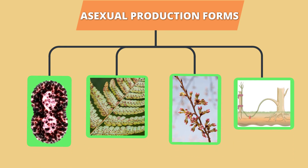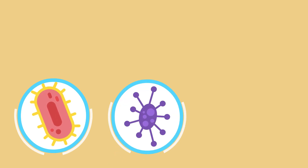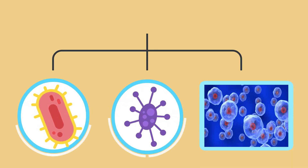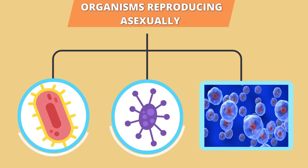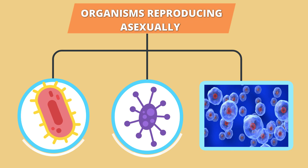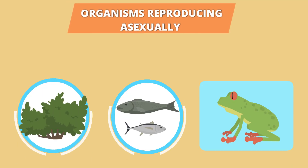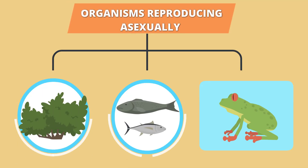and vegetative propagation. Bacteria, viruses, and other single-celled organisms reproduce asexually. But there are some plants, fish, and amphibians who reproduce asexually too.